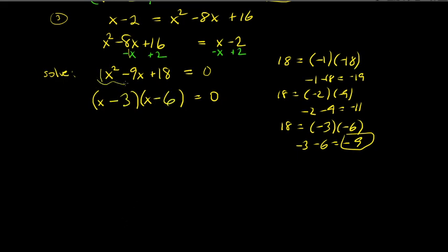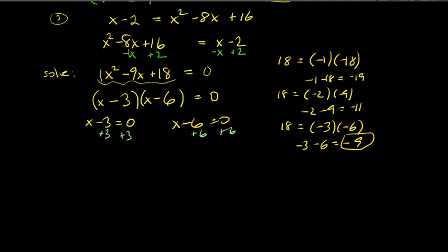Set each factor equal to zero: x minus 3 equals 0 gives x equals 3, and x minus 6 equals 0 gives x equals 6. We have two possible answers. Now we must check both against the original equation.